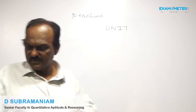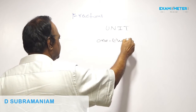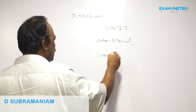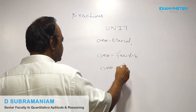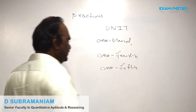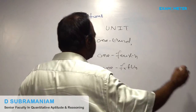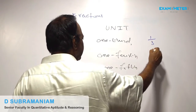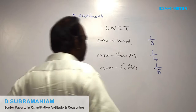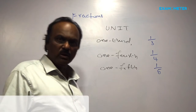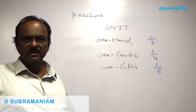Second point: The fractions one third, one fourth, one fifth can be written as one by three, one by four, one by five, etc.